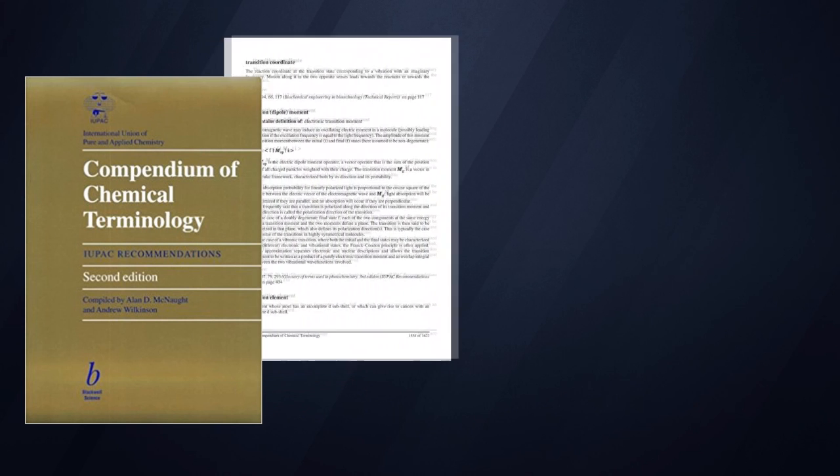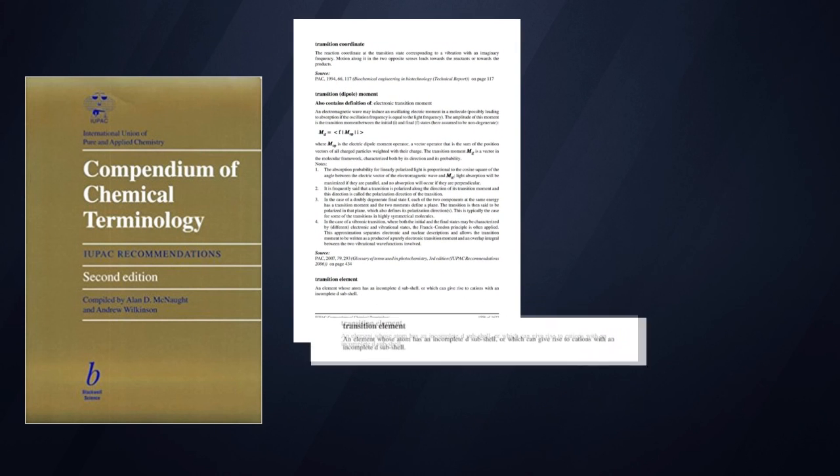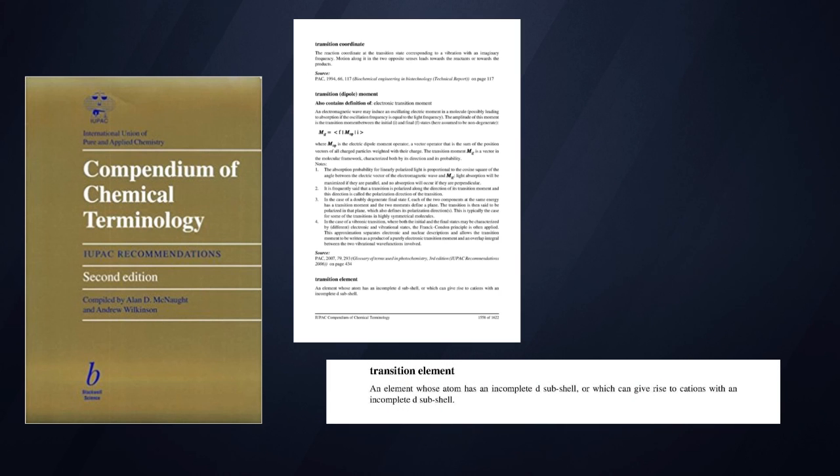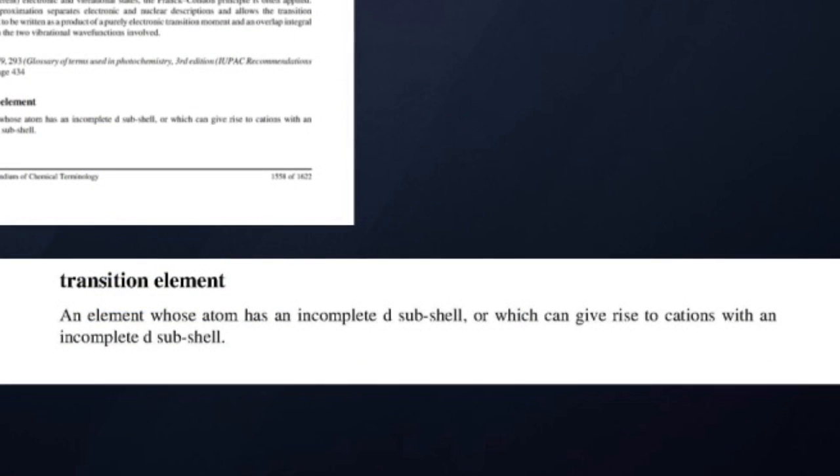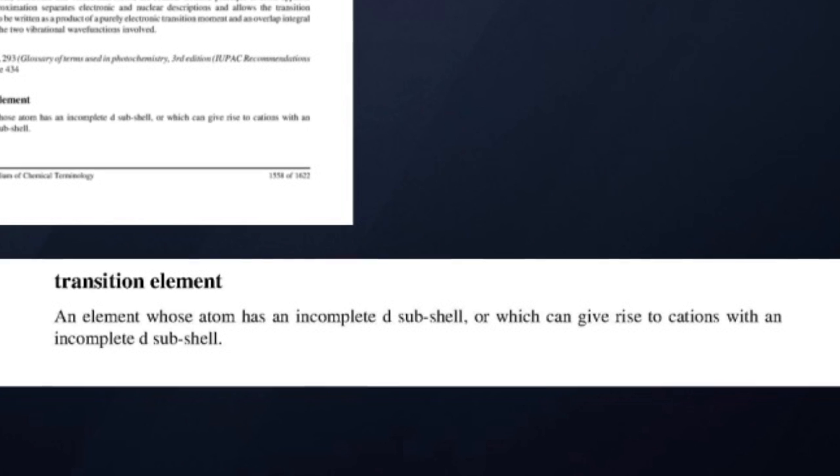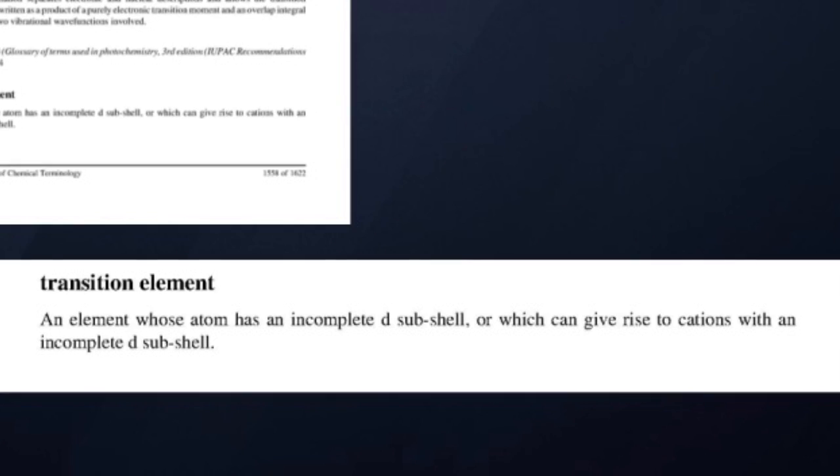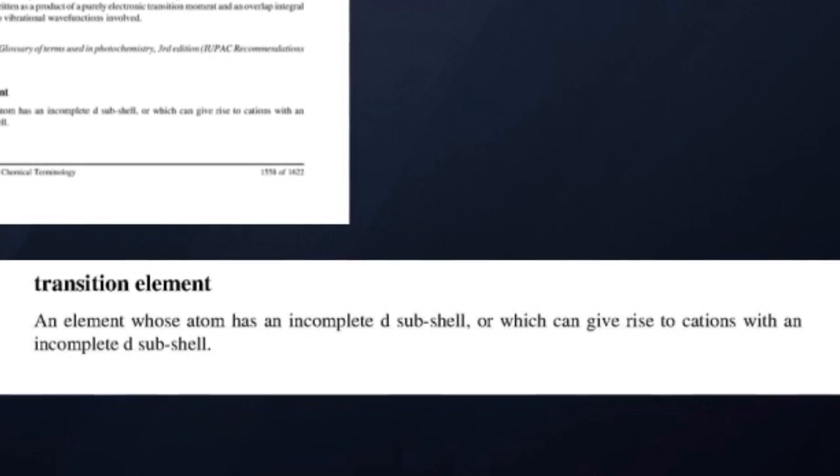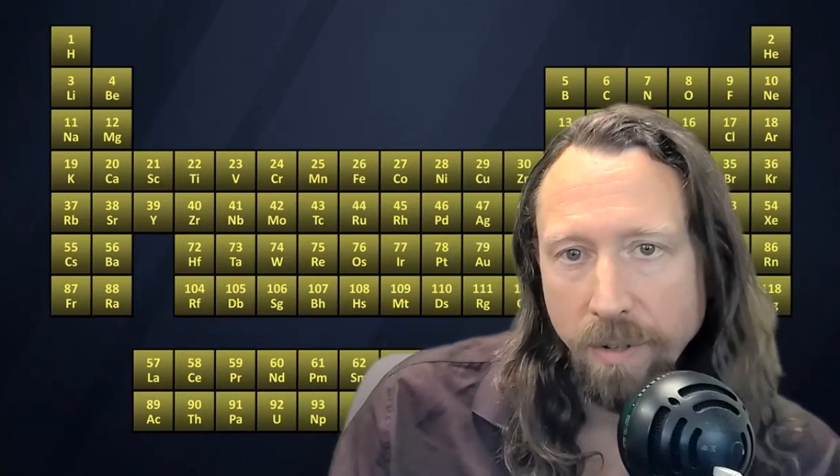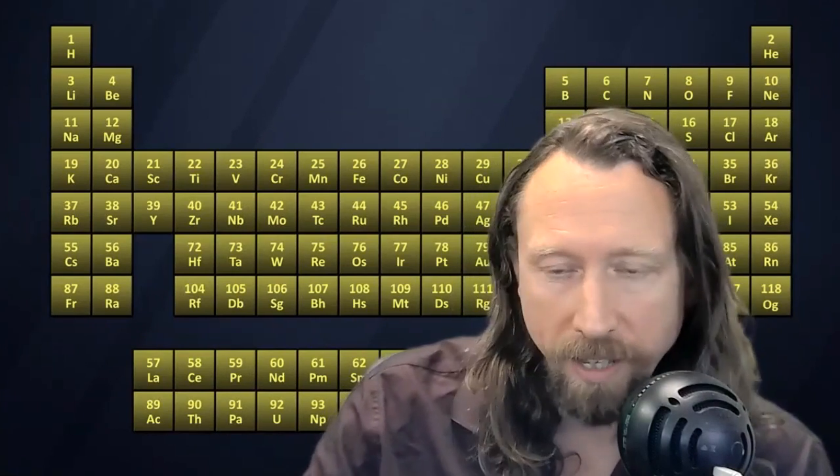If we go to the IUPAC goldbook and take a look at its definition of a transition element, we find that the IUPAC defines a transition element as an element whose atom has an incomplete D subshell, or which can give rise to cations with an incomplete D subshell. This is a pretty good working definition, but it still leads to some debate and a little bit of ambiguity about exactly which elements from the D block qualify as transition metal.